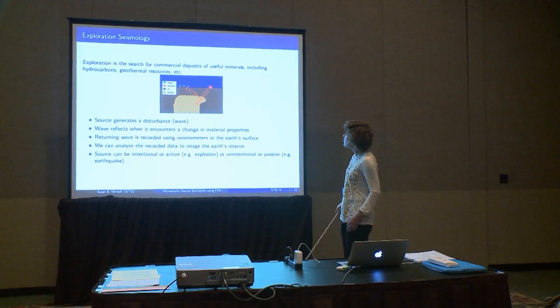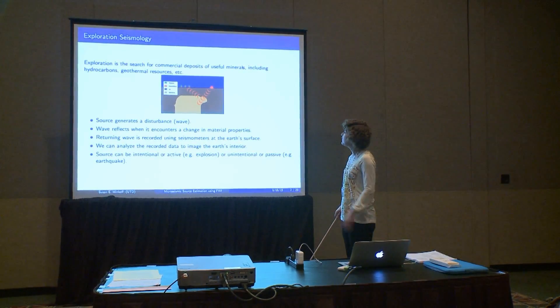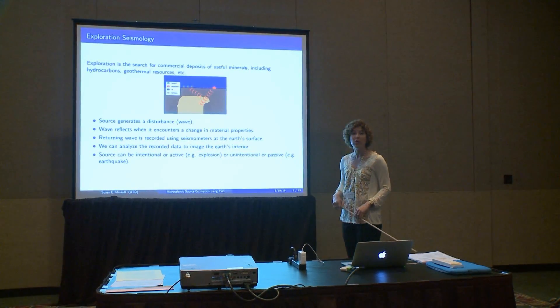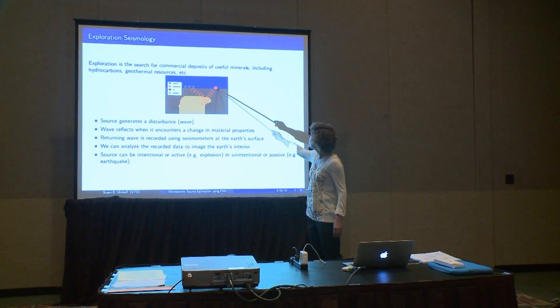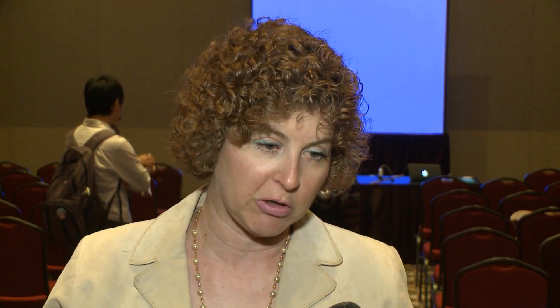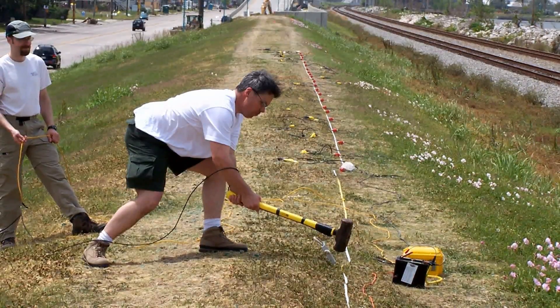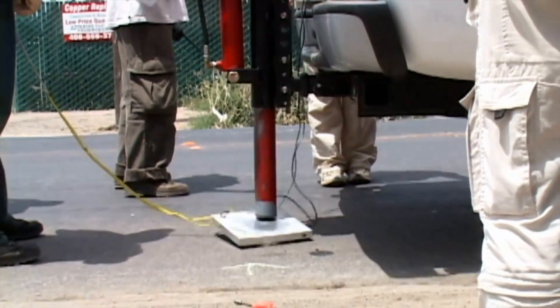The actual experiment being shown here is an attempt to understand what the subsurface looks like. How do you generate a disturbance like a wave that would propagate into the ground? I have been on seismic experiments where the U.S. Geological Survey actually dug a big hole in the ground and put 2,000 pounds of dynamite in that hole and exploded it. Another approach is hitting the ground really hard with a big hammer off the back of a truck, which makes the ground vibrate and causes a wave or disturbance.